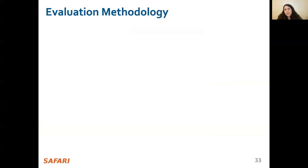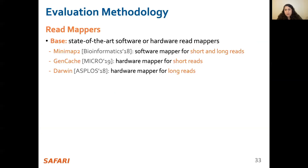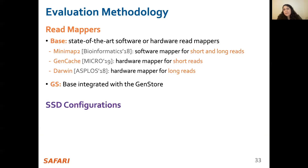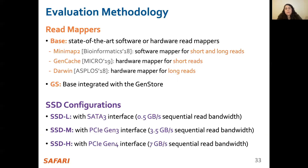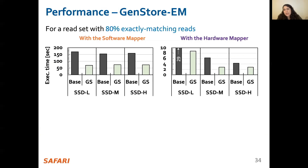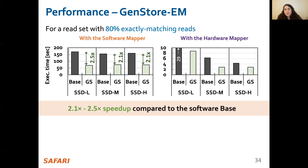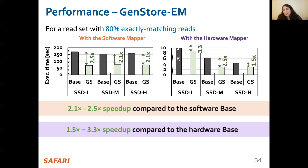I will now go into our results. We evaluate the following systems: Base, which is state-of-the-art software or hardware readmappers for both short and long reads, and GS, which is Base integrated with GenStore inside the SSD. We evaluate these mappers and systems with various SSD configurations: a low-end, a medium-end, and a high-end SSD. We analyzed the benefits of GenStore EM for a 22 GB short read set where 80% of reads exactly match some subsequences in the reference genome and can be filtered. GenStore provides up to 2.5x speedup compared to the software baseline and up to 3.3x speedup compared to the hardware baseline, with an average 3.9x energy reduction.